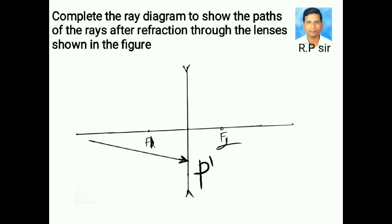Let us complete a ray diagram. It belongs to concave lens. This is incident ray. It meets the concave lens at P dash.